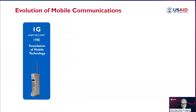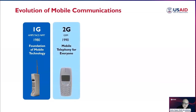1G was the first mobile phone technology and used analog signals to enable basic voice calling. These early mobile phones were large and expensive, and network coverage was limited. Despite its limitations, 1G laid the foundation for the mobile revolution. Next was 2G, introduced in the 1990s, which enabled basic voice and text messaging services. The killer application of 2G, specifically in the Philippines, was SMS — we became the text capital of the world when GSM was launched here.